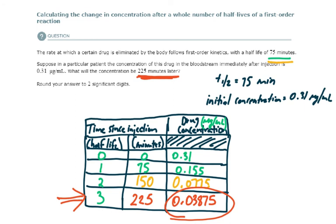Round it to two significant digits, it would be 0.039 milligrams per microliter. You could also report that as scientific notation as well.